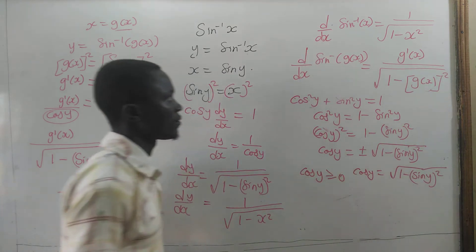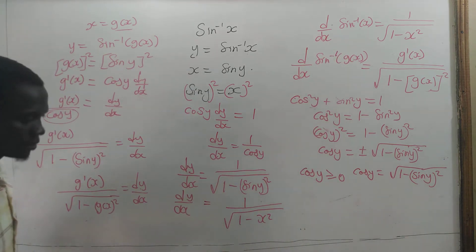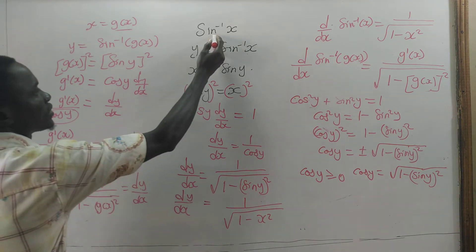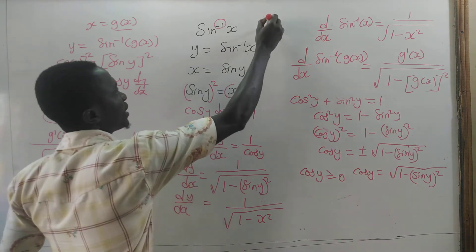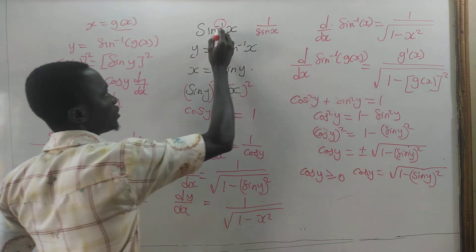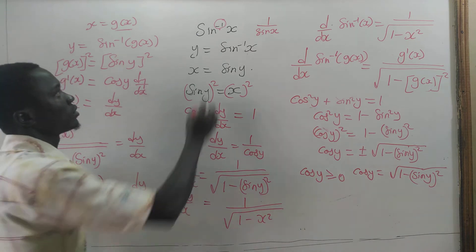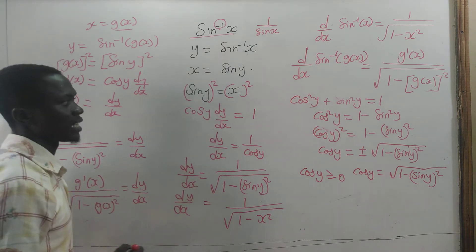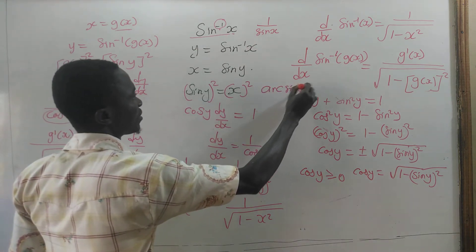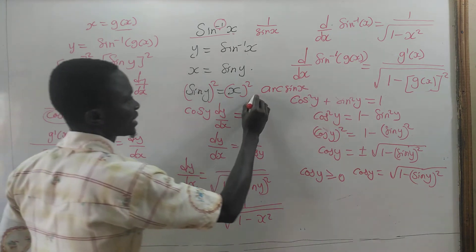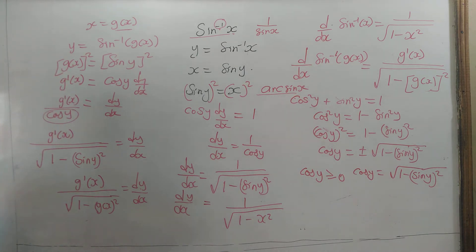Now, remember that when we write sin to the power negative one, it does not mean 1 divided by sin x. We are just using this to show that this is the inverse, or the arcsin function. In order not to be confused, some books write sin inverse of x as arcsin. So you can use arcsin or sin inverse interchangeably. Now let's take some examples.